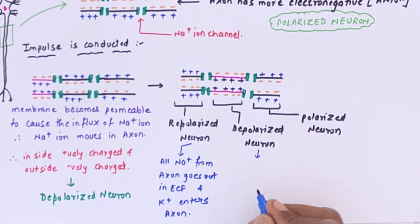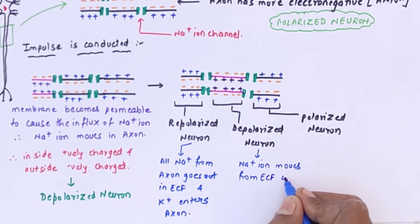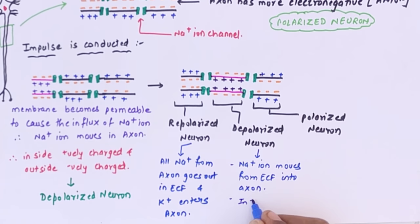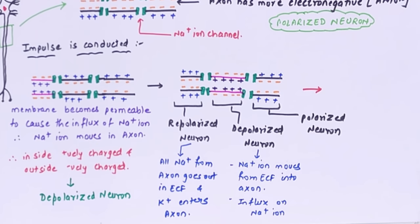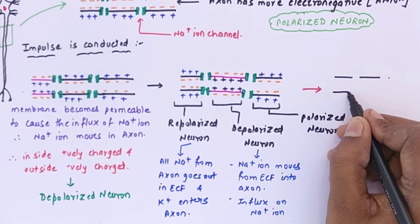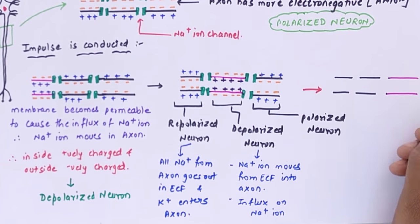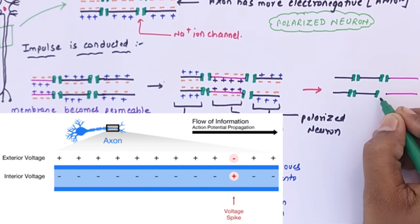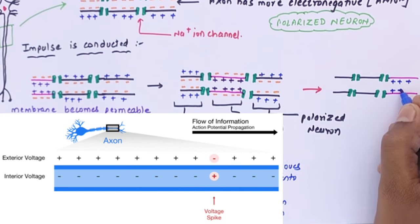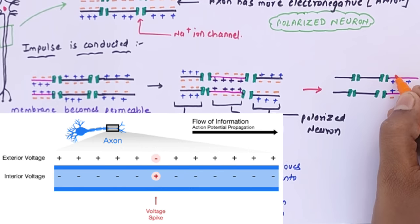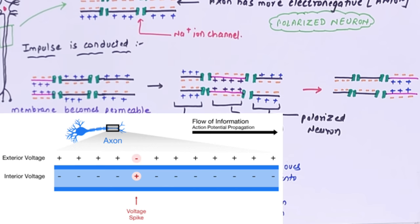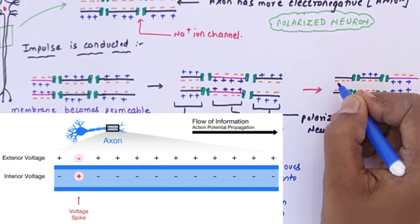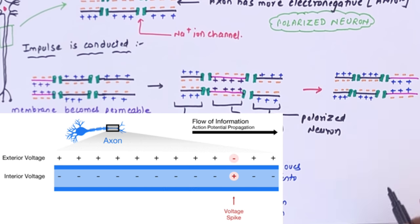In a repolarized neuron, all the Na+ from the axon goes out into ECF and K+ enters the axon — for every 3 Na+ out, 2 K+ enter. In a depolarized neuron, Na+ from ECF moves back into the axon — this is influx of Na+. In a repolarized neuron, it is efflux of Na+. When the impulse reaches the last part of the axon, it travels to the axonic knob where it gets packed in vesicles and through the synapse is transferred to the next neuron.